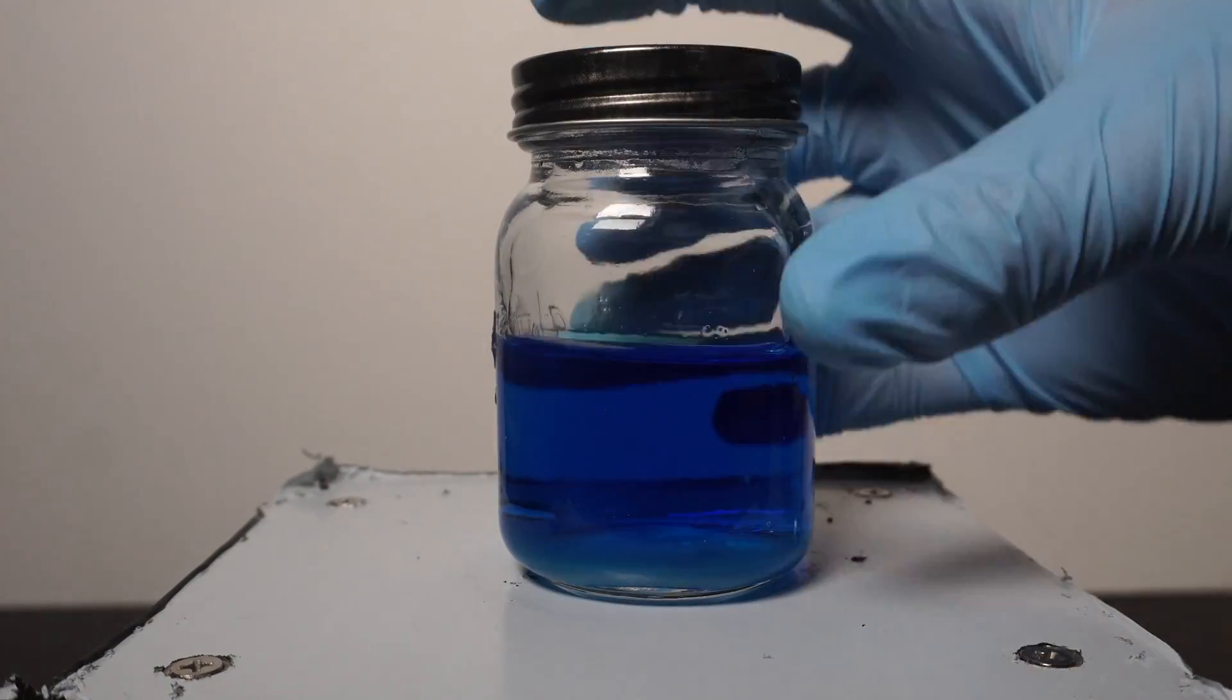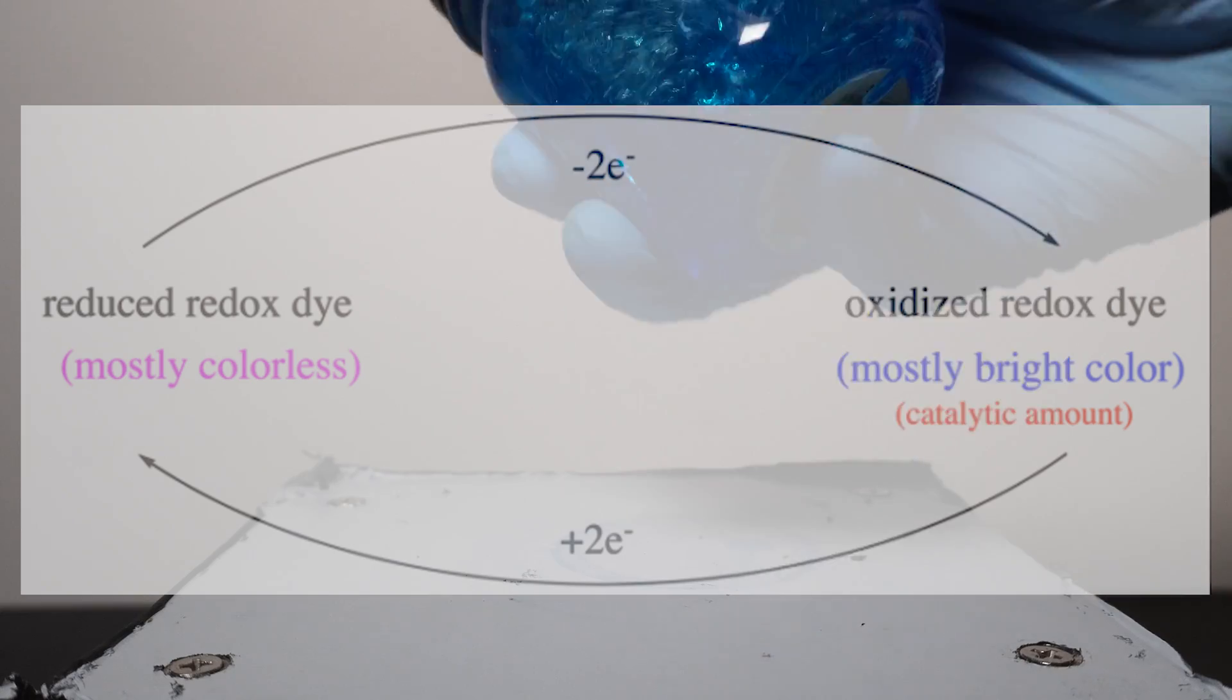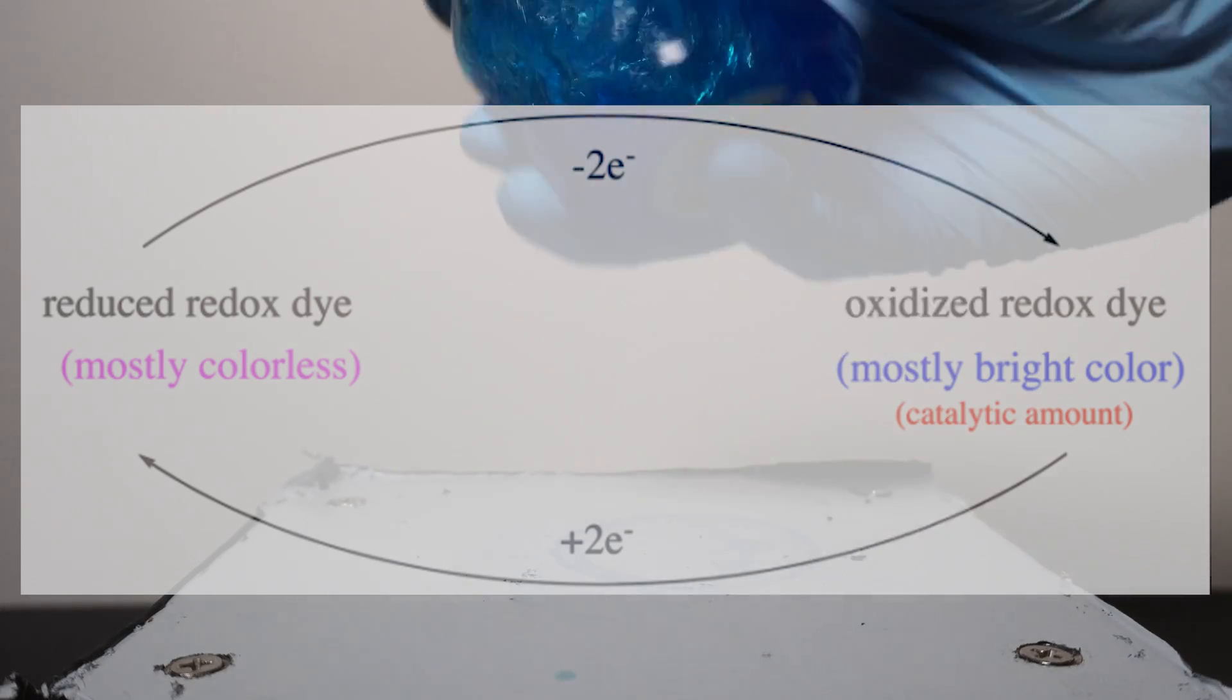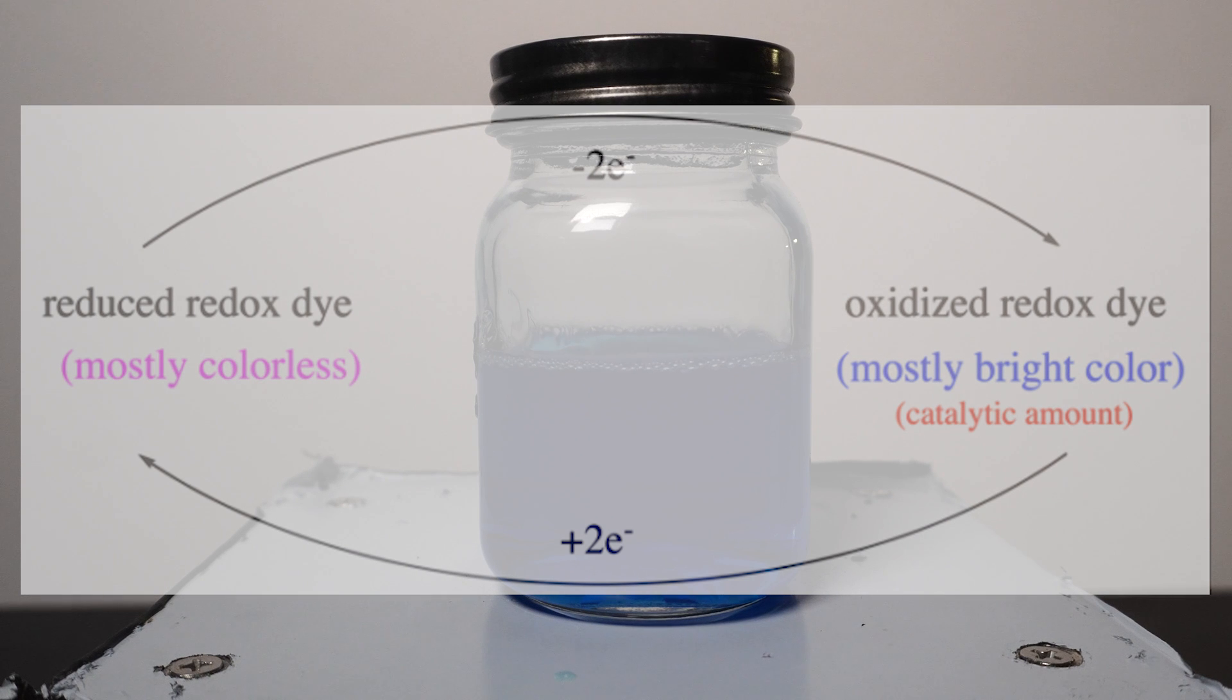The agent in both solutions is the methylene blue. Methylene blue under basic conditions will oxidize or strip an electron from the glucose molecule. Adding oxygen to the solution by shaking the flask causes the methylene blue to reduce the oxygen by transferring the electron that it received from the glucose to oxygen.